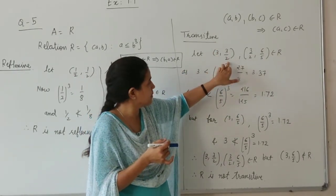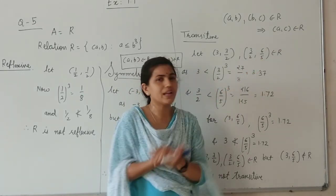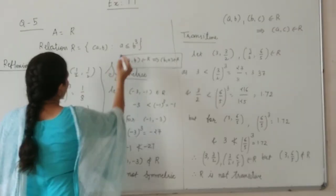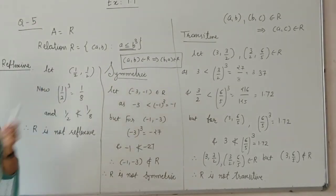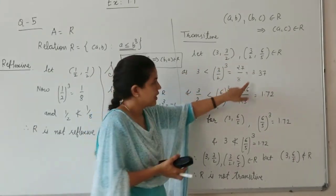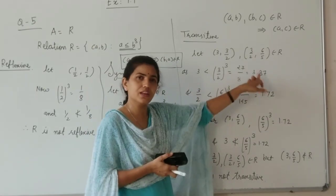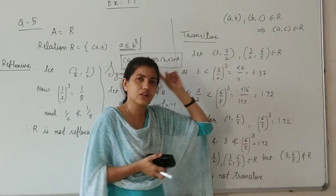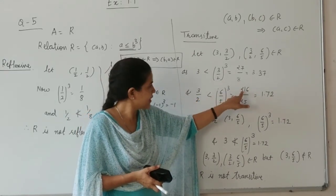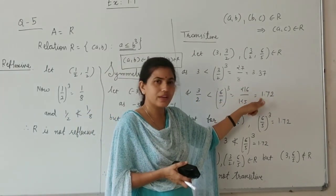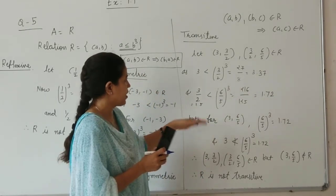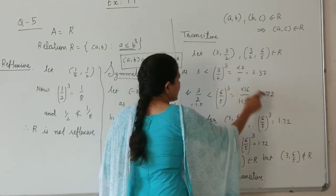These two elements belong to R. Let me check if (3, 3/2) belongs to R. Now (3/2)³ is 27/8, that is 3.375. So obviously 3 is less than 3.375, so (3, 3/2) belongs to R. Second, (3/2, 6/5): (6/5)³ is 216/125, that is approximately 1.72. And 3/2 is 1.5. Since 1.5 is less than 1.72, (3/2, 6/5) belongs to R.